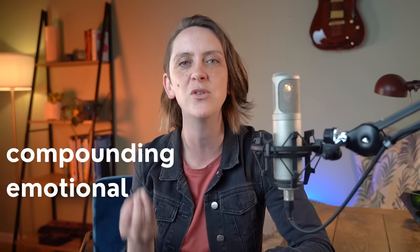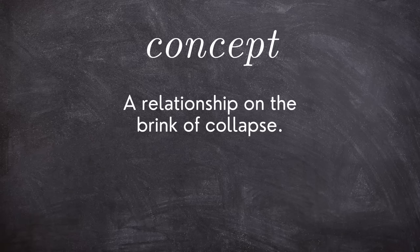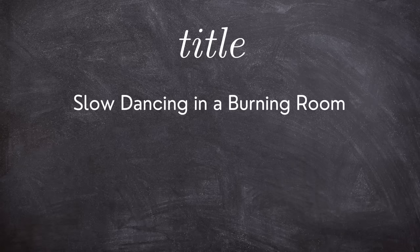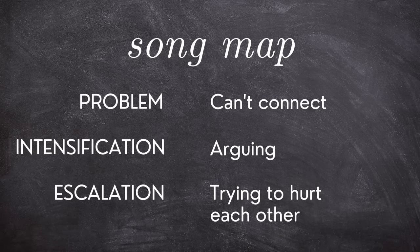There are two other song maps I want to show you that I think of as universal song maps — meaning the song map itself is a clear trajectory from beginning to middle to end, with compounding emotional impact every time. The first universal song map is: problem, intensification, escalation. A great example is Slow Dancing in a Burning Room by John Mayer. The concept is a relationship on the brink of collapse, and that extraordinary title creates an incredible image. The song map starts with the narrator sensing there's a problem — the two characters can no longer connect. Then the problem intensifies: not only are they not connecting, they're actively arguing, picking fights. And the final point of escalation is not just picking fights but deliberately trying to hurt each other. Problem, intensification, escalation.